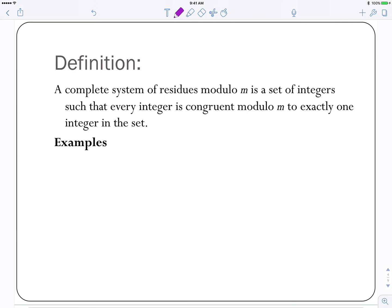Again, pause the video and take a look at this definition. So we're talking about a complete system of residues mod M. Is a set of integers such that every integer is congruent modulo M to exactly 1 integer in that set. That's a real fancy way to say basically the set of all possible remainders. So again, if we look at modulo 5, 0, 1, 2, 3, and 4 are the set of all possible remainders. And we just said every integer is congruent to exactly one of those. So that's a complete system of residues modulo M.